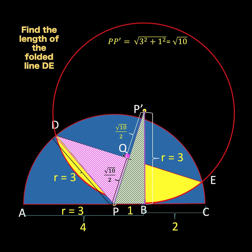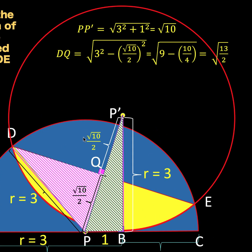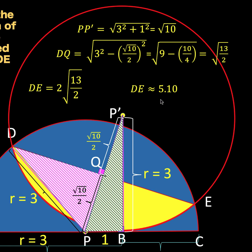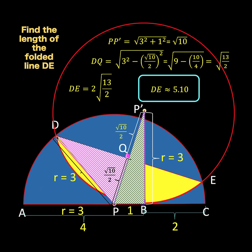Using the Pythagorean theorem, DQ equals the square root of the hypotenuse squared minus the leg squared: square root of three squared minus the square of square root of ten over two. Three squared is nine, the square of square root of ten is ten, and the square of two is four, simplifying to square root of thirteen over two. To find DE we just double that: doubling square root of thirteen over two gives us square root of 26, which is approximately 5.10 units. This is our final answer — the length of the folded line DE is approximately 5.10 units.